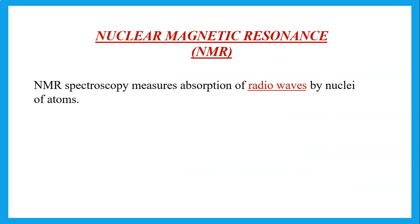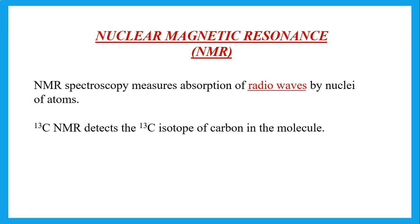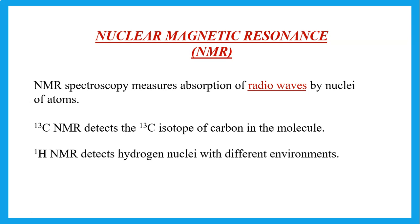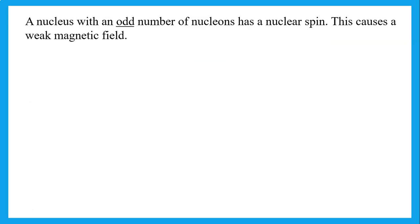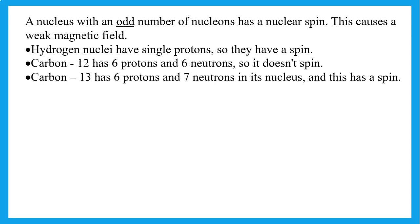NMR (nuclear magnetic resonance) absorbs radio waves. We have two types: carbon-13 NMR that detects the carbon-13 isotope, and proton NMR that detects hydrogen nuclei. For a nucleus to absorb in NMR, it must have an odd number of nucleons. A hydrogen nucleus has only one proton, so it has a spin. Carbon-12 has 12 nucleons (even number) so cannot have a spin, but carbon-13 has 13 nucleons (odd) so it does have a spin.